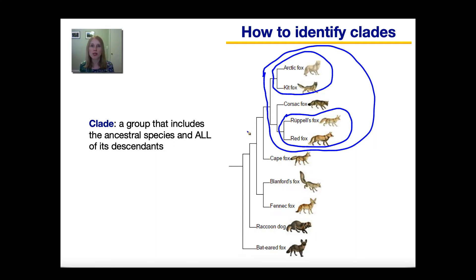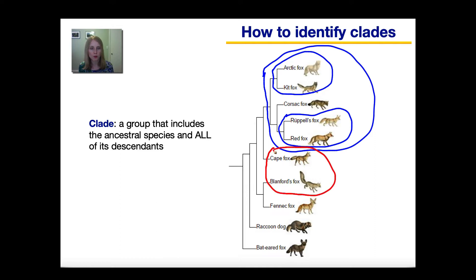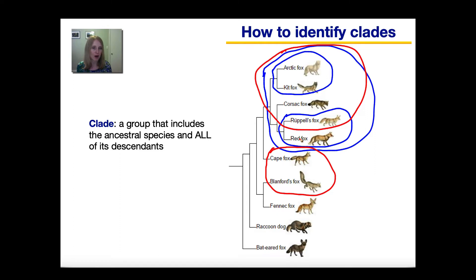What grouping would not be considered a clade? A grouping that would not be a clade would be, say, if I considered these two to be one clade. That's not a clade because, while they can be traced back to a common ancestor, I did not include all of the descendants from that common ancestor. Another example: this grouping in red would not be a clade — all of these can be traced back to a common ancestor, but I missed out on the red fox. The clade would have to include all of the descendants from this particular ancestor.